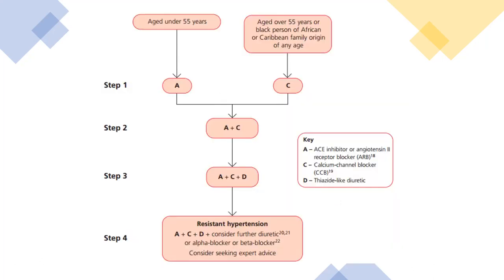The 2019 NICE guideline recommends: below age 55, start with an ACE inhibitor or ARB; above age 55 and for Black patients, start with a calcium channel blocker. In the second step, combine ACE inhibitor or ARB with a calcium channel blocker. In the third step, add a diuretic. In step four, diagnose resistant hypertension.